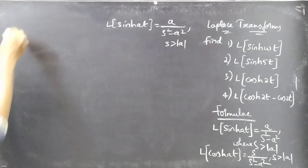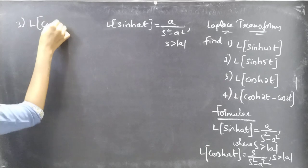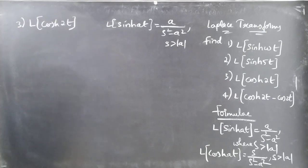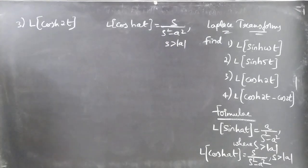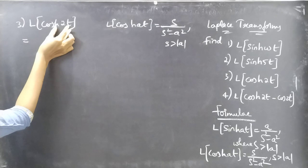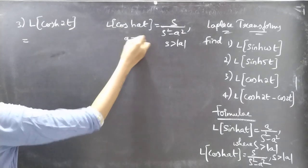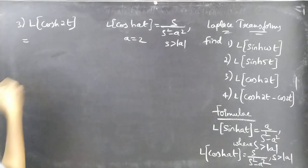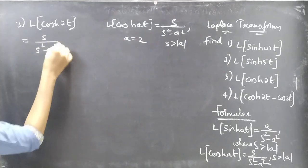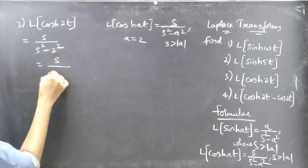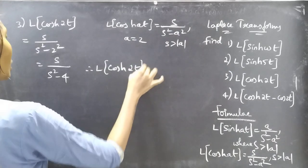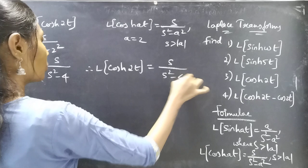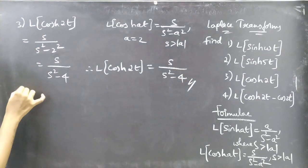Now coming to the third problem: find L of cosh(2t). We know that L of cosh(AT) equals S by S squared minus A squared. For A equal to 2, just replace A by 2, which gives us S by S squared minus 2 squared, which gives us S by S squared minus 4. Therefore, L of cosh(2t) equals S by S squared minus 4.